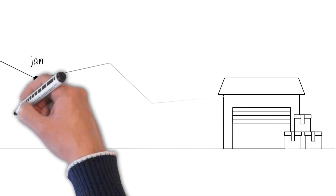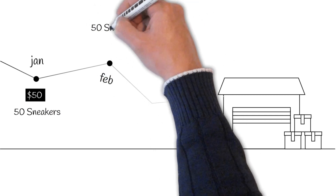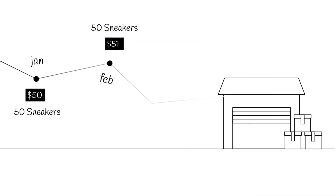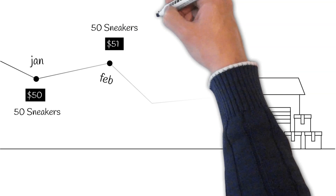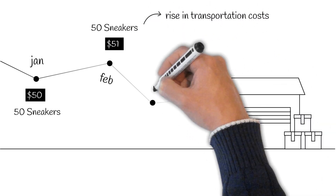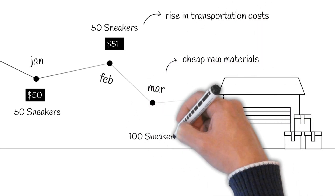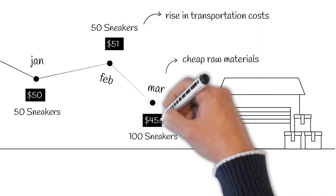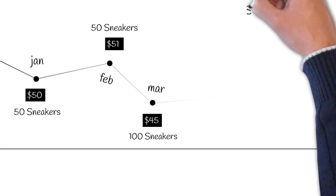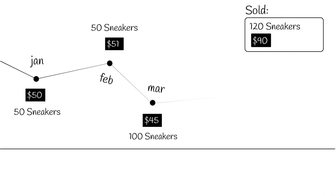In January, you bought 50 pairs of sneakers at the rate of $50 a pair. In February, you bought another 50 pairs, but at $51 a pair, owing to a rise in transportation costs. Then, the raw materials got cheaper in March, and you were able to buy 100 pairs of the same sneakers at $45 a pair. During the first quarter, you sold around 120 pairs of sneakers at the standard rate of $90 a pair.